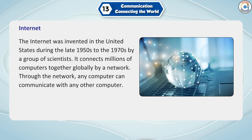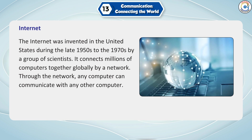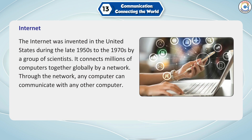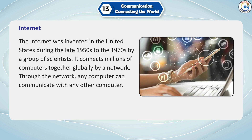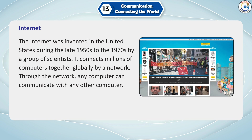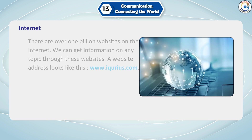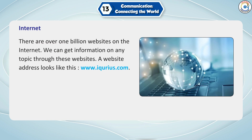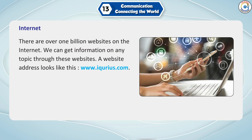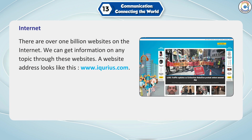The Internet was invented in the United States during the late 1950s to the 1970s by a group of scientists. It connects millions of computers together globally by a network. Through the network, any computer can communicate with any other computer. There are over 1 billion websites on the Internet. We can get information on any topic through these websites.